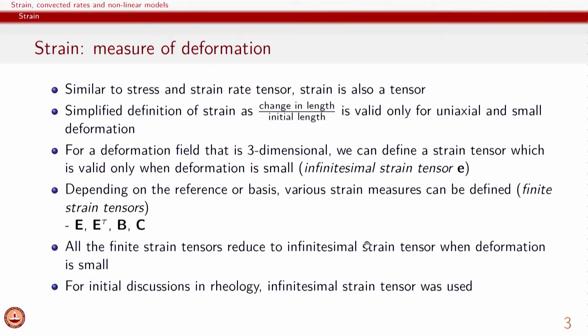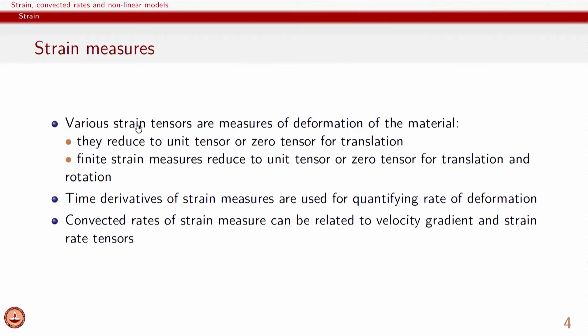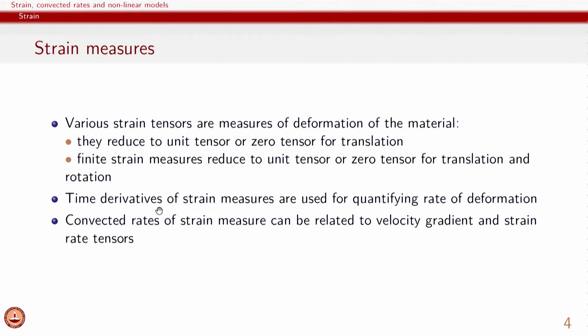We will also see that if there is only rigid body translation or rotation, these strain measures will reduce to expected quantities. For example, E and E-tau will reduce to 0 while the finger strain tensor B will reduce to unity. The time derivatives of these strain measures are what are useful for non-linear description of rheological response, and for these time derivatives we will use convected rates. For advanced learners, we can show how the convected rates of strain are related to the strain rate tensor and velocity gradient tensor.